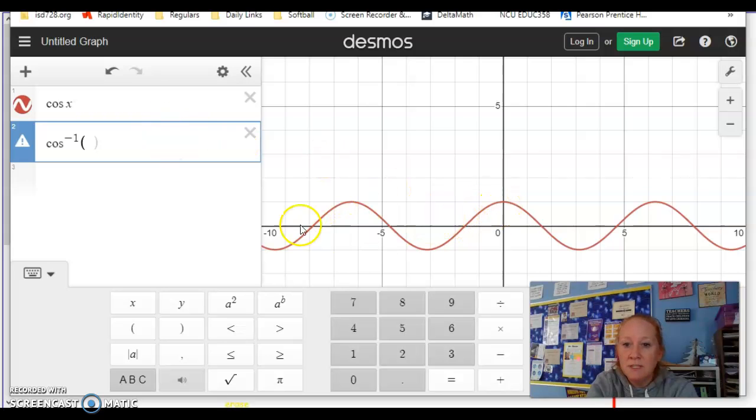Remember how we talked about how this is a function because it passes the vertical line test, but when we're doing horizontal line tests, what little piece do we want? I'm going to say let's start high and end low. I think it's going to be from here to here. It gets to the bottom at pi.